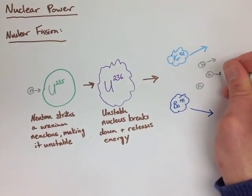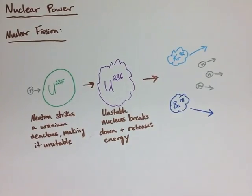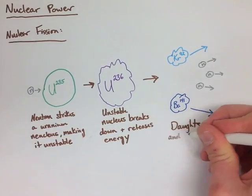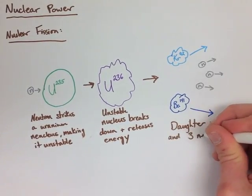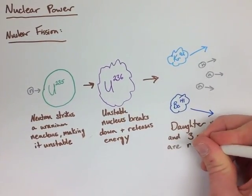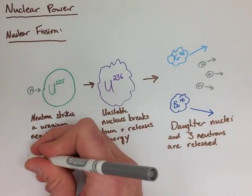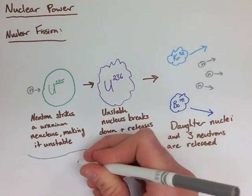What this means is that the mass of the reactants, which are on the left-hand side of this equation, really it's just the uranium and that one extra neutron that we've shot into it. So we have our reactants over on the left.